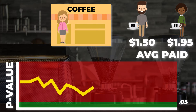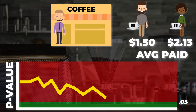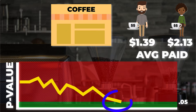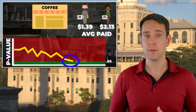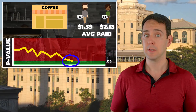As time passes, you can see the p-value bouncing around, and then — with that last customer — the p-value just dropped to 0.04, which is below our threshold of 0.05. So we have a statistically significant result. We now know that women pay more than men. Or do we?